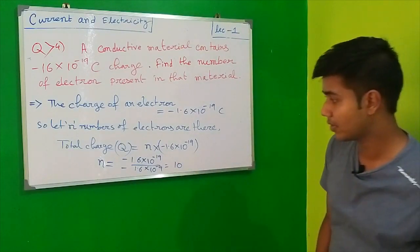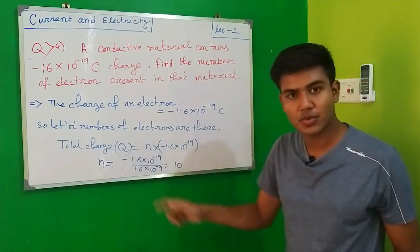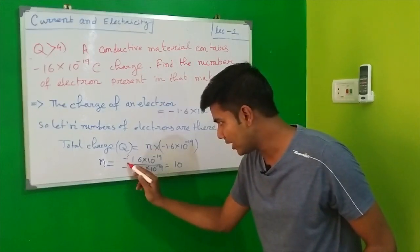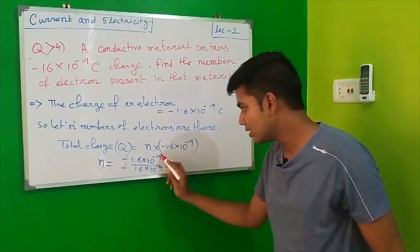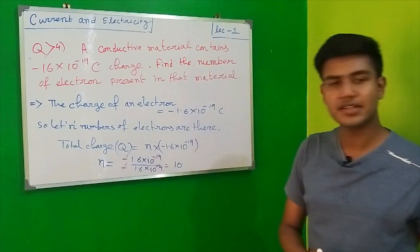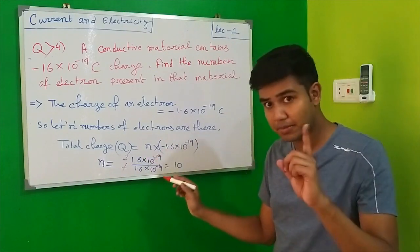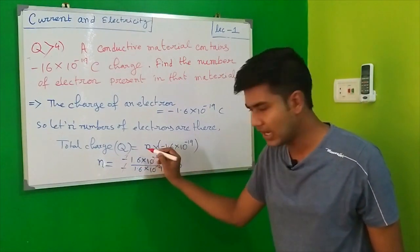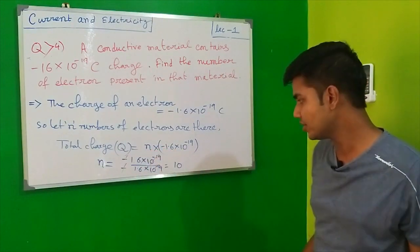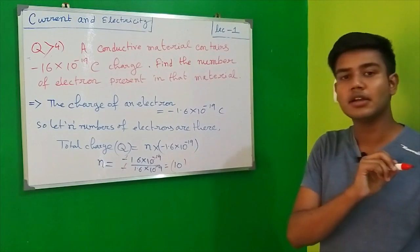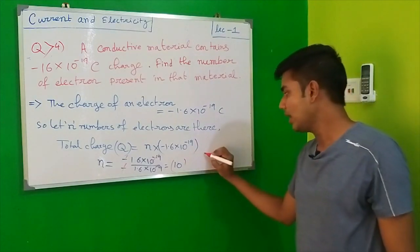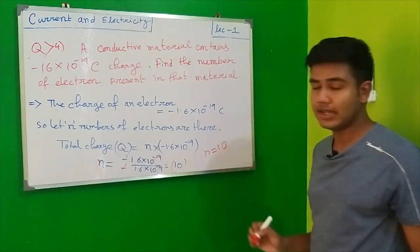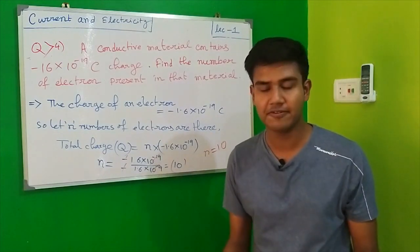Rearranging the equation: the minus signs cancel, 10⁻¹⁹ cancels, and 16 and 16 cancel. But one decimal point is there, so another 10 comes as reciprocal, and we get 10 as the result. Therefore, n equals 10, which is the number of free electrons present. That's the answer.